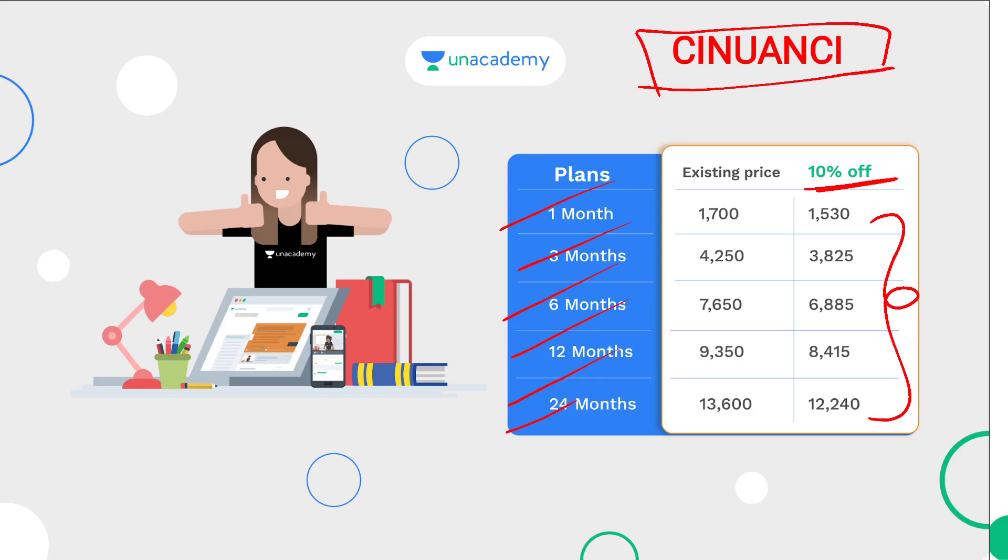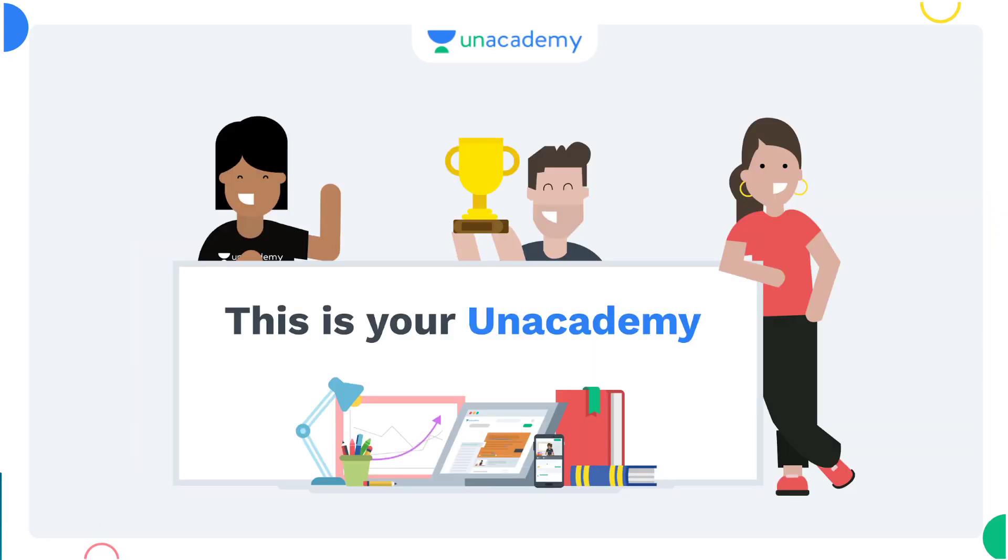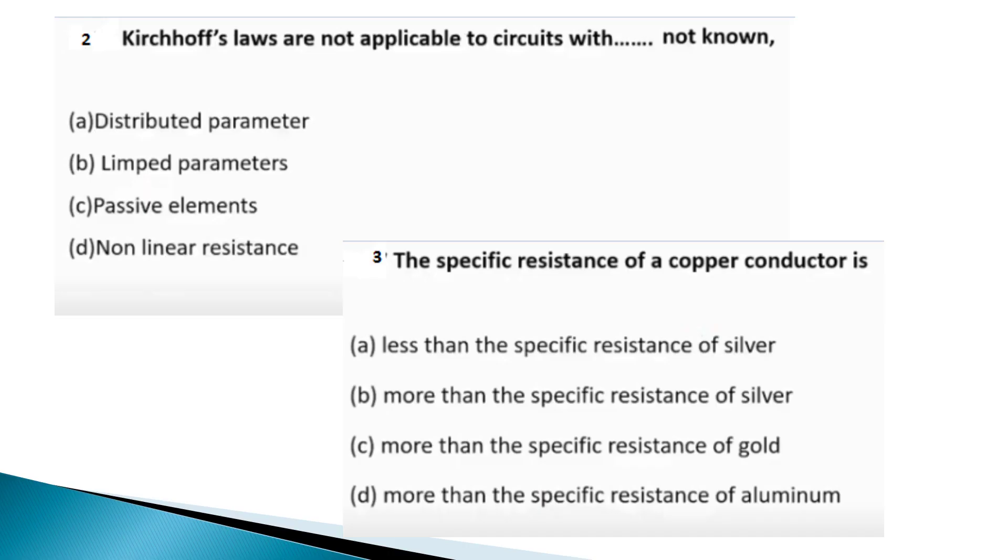We will see the first question about linear resistance and distributed parameters. Specific resistance of a copper conductor is less than specific resistance of silver, more than specific resistance of silver, more than specific resistance of gold, more than specific resistance of aluminum. Specific resistance of a copper conductor is more than specific resistance of silver.